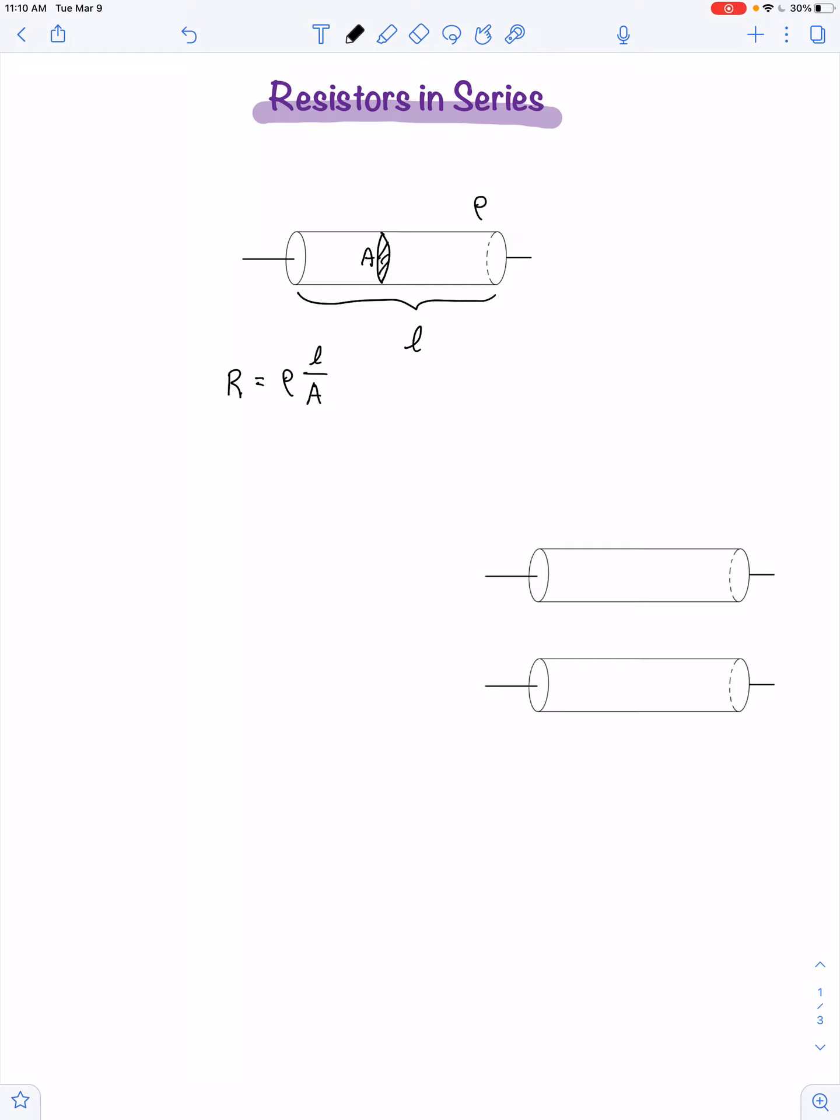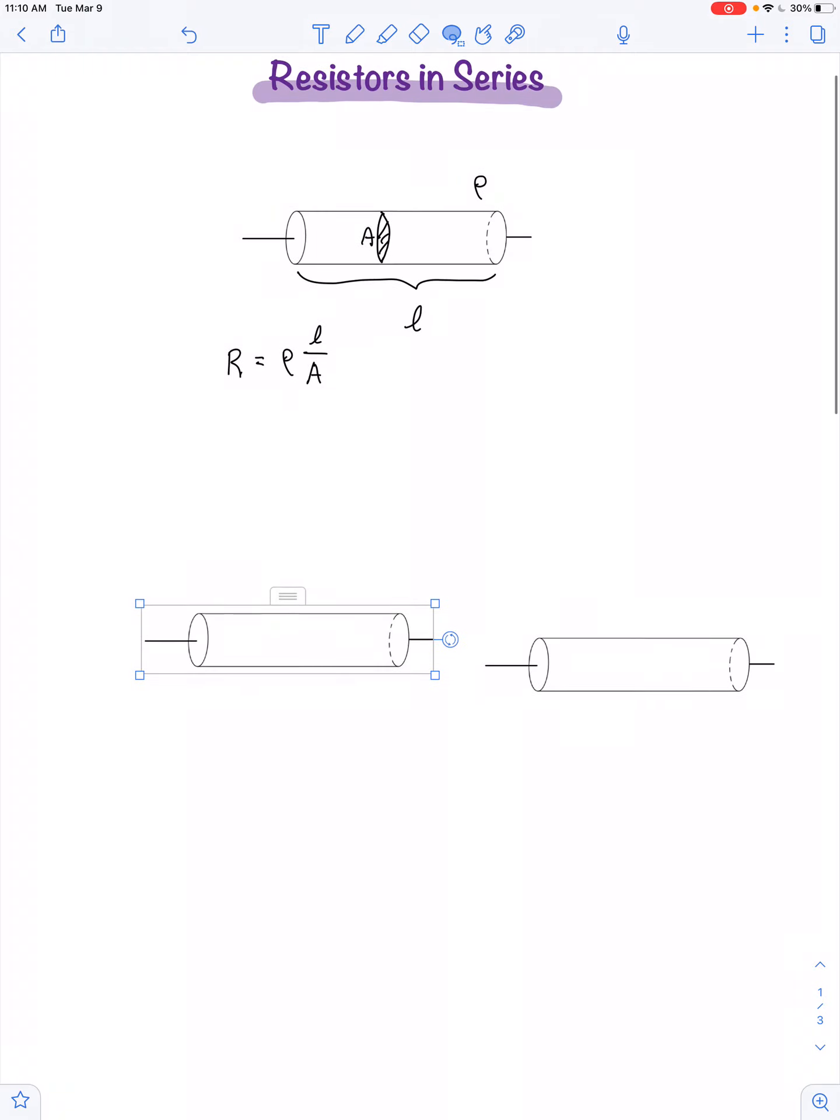What happens if you take two resistors and connect them together? Well if we connect them end to end, we can make a series connection out of the two resistors. What have we really done here? This would be the same thing as just having one longer resistor of the same cross-sectional area.